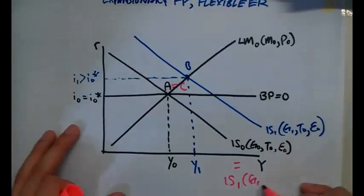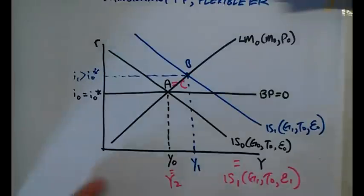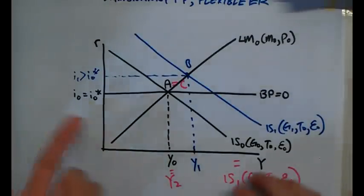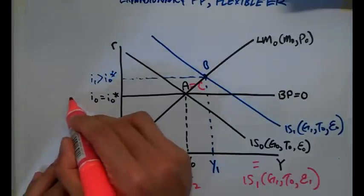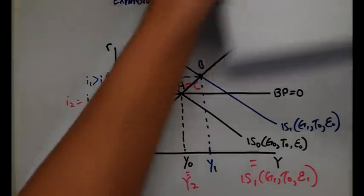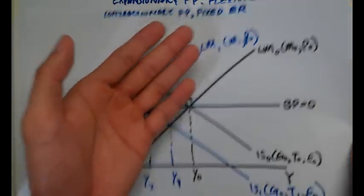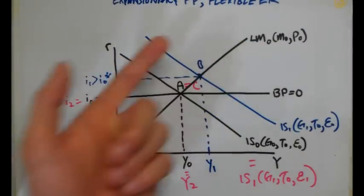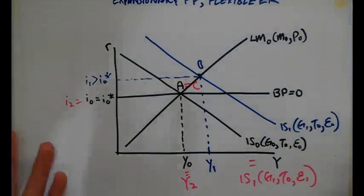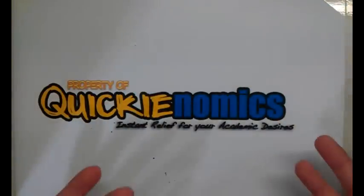Therefore the IS curve shifts back left until it returns to the original equilibrium at point A, also called point C. IS0 equals IS1 with government spending at G1, taxes unchanged, and the real exchange rate changed from E0 to E1. Output Y0 equals Y2, and interest rates return to i-naught equals i-naught-star. Comparing fixed and flexible exchange rates: under fixed rates, fiscal policy is very effective; under flexible rates, fiscal policy is not effective — we go back to square one.